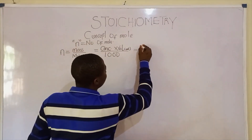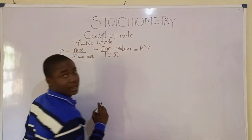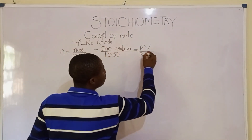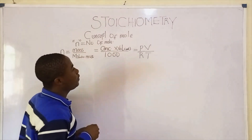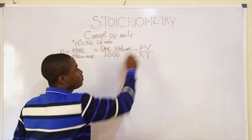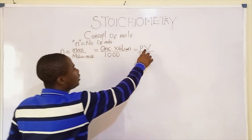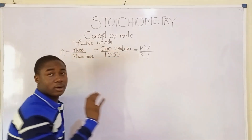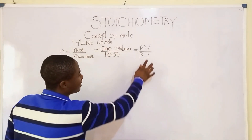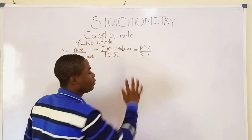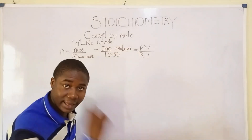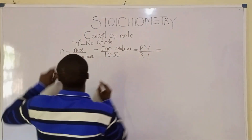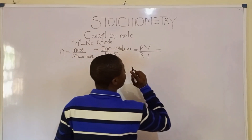Moving forward, the same number of moles can also be given by the formula PV over RT, where P is pressure, V is volume, R is the molar gas constant, and T is temperature in the Kelvin scale.